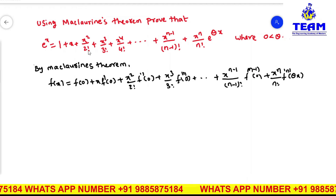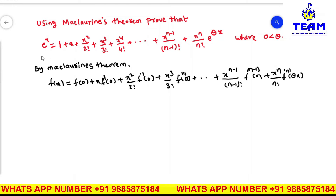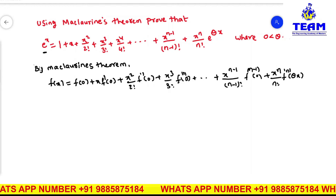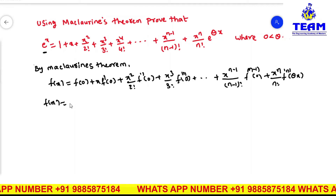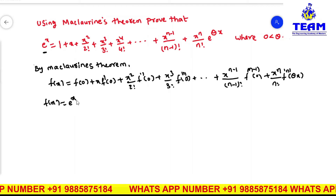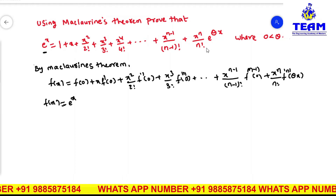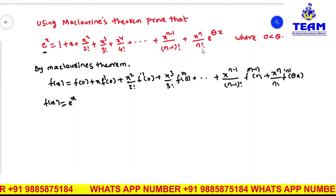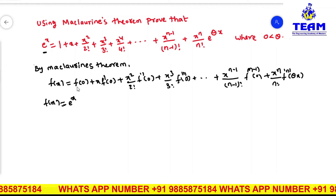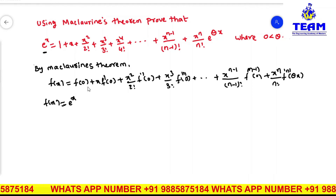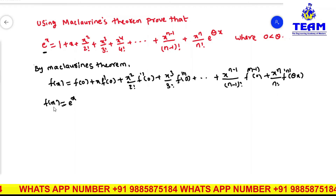To get this expansion, observe what is given: f(x) = e^x. We need to prove the entire expansion. On the right side of f(x) from Maclaurin's theorem, we need f(0). Do you know what f(0) is directly? We know f(x), so from f(x) we need to find f(0).